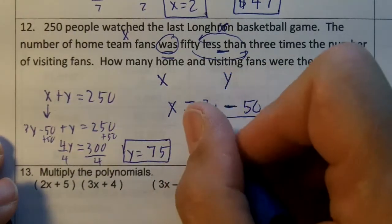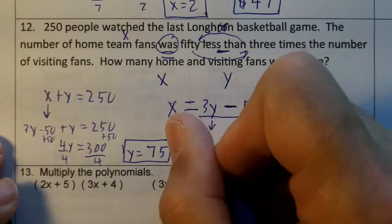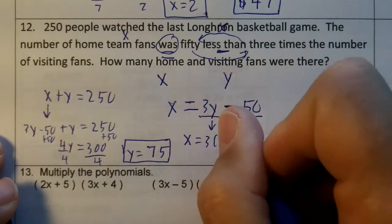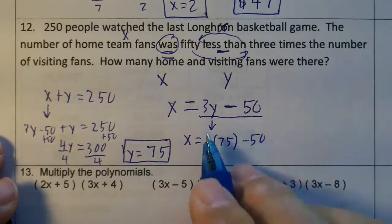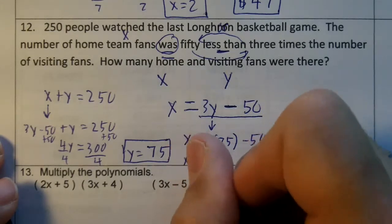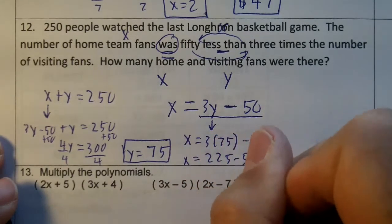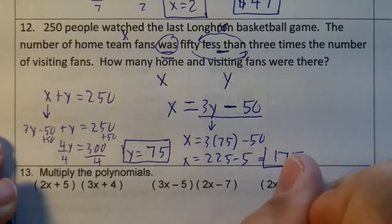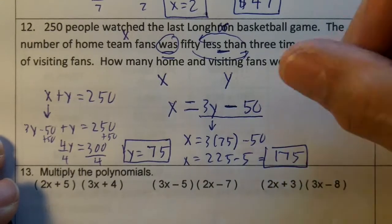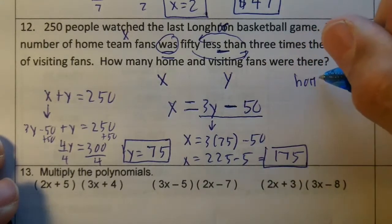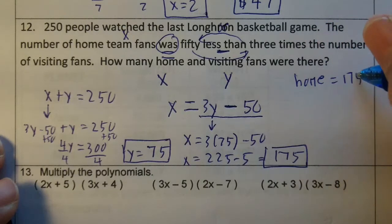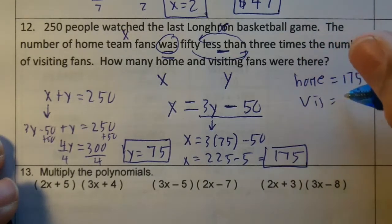So we're going to take this 75 and put it right here. X would be 3 times 75 minus 50. 3 times 75 is 225 minus 50, which would end up being 175. So home equals 175 and visiting equals 75.